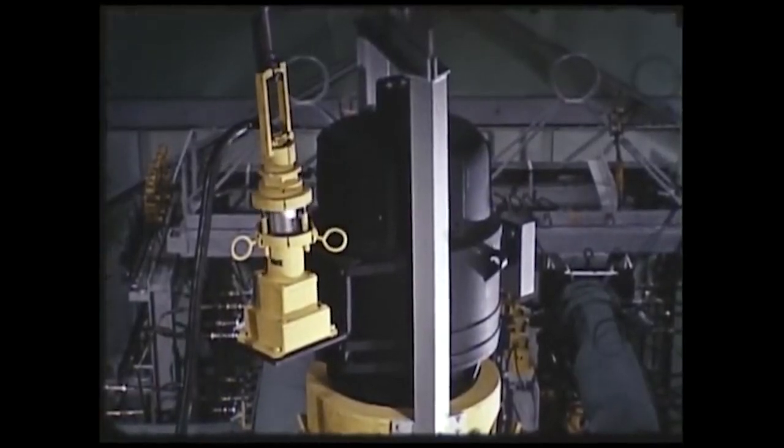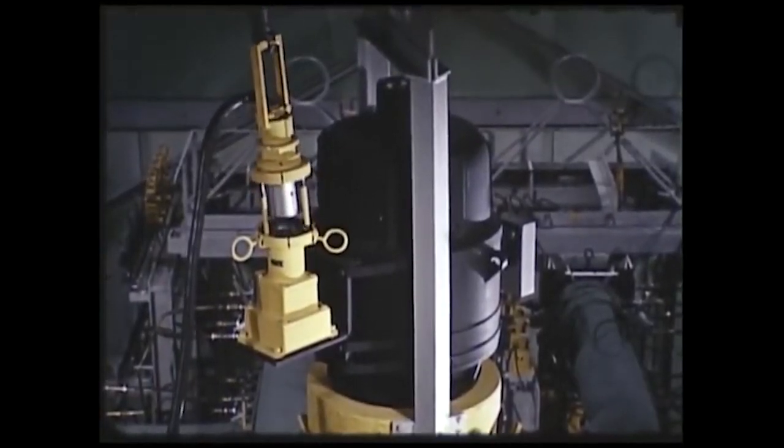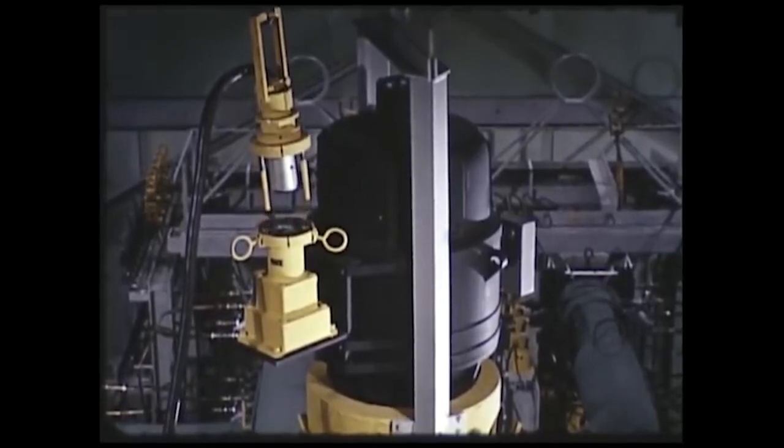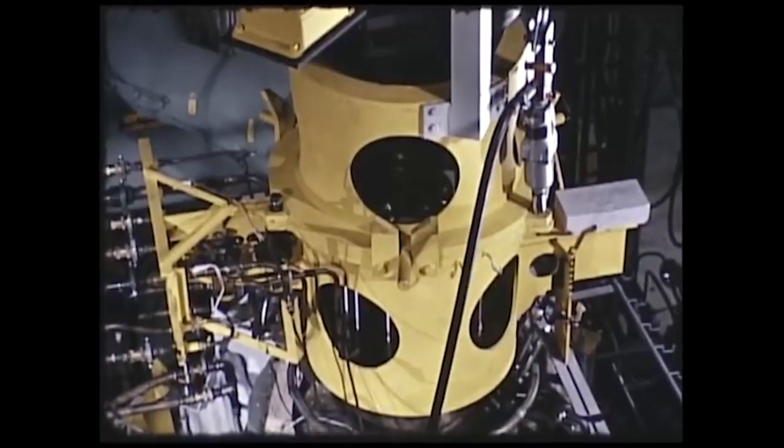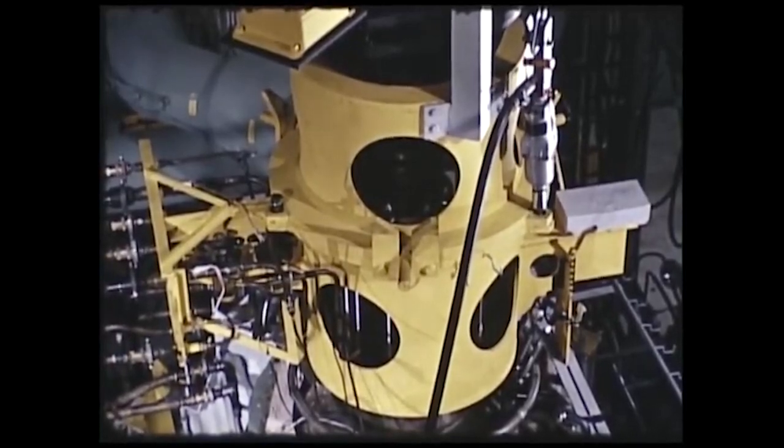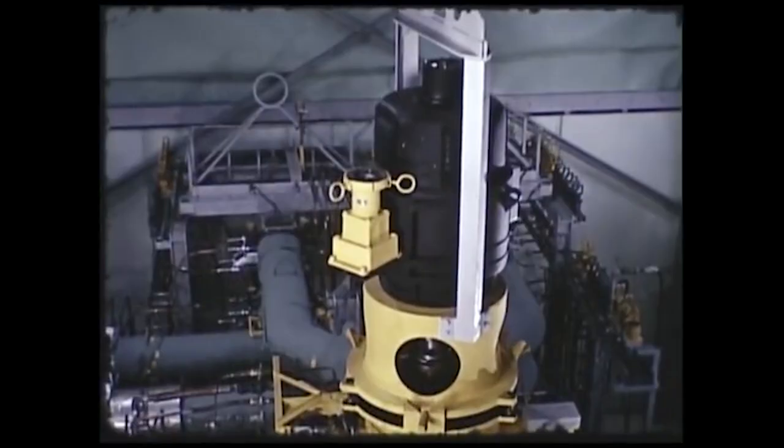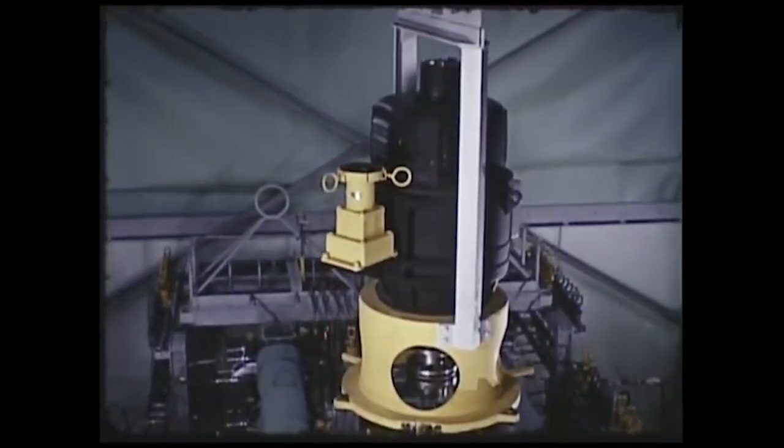In removing the motor, pump, and reactor, the motor is first disconnected electrically by the remote manipulator. Three bolts holding the motor and pump spool units together are loosened with a pneumatically operated impact wrench. The motor is lifted from the pump and removed from the cell.